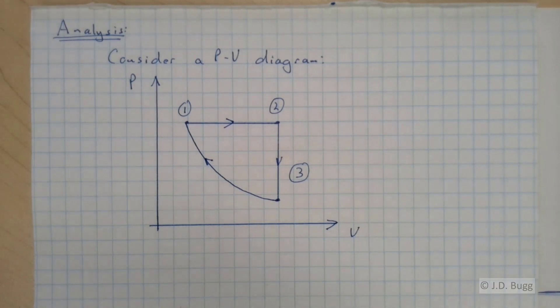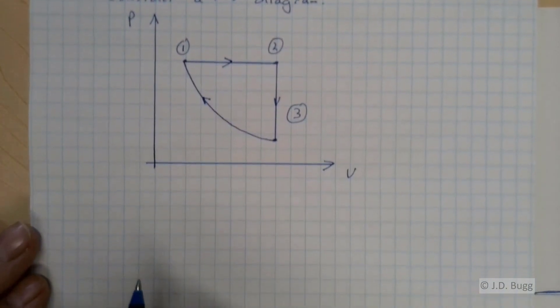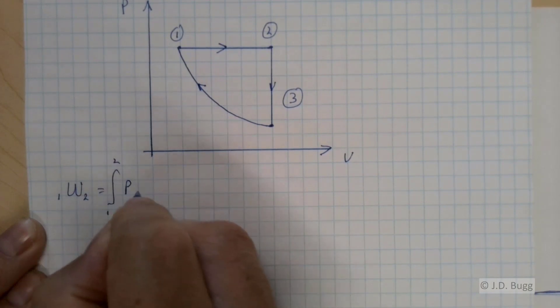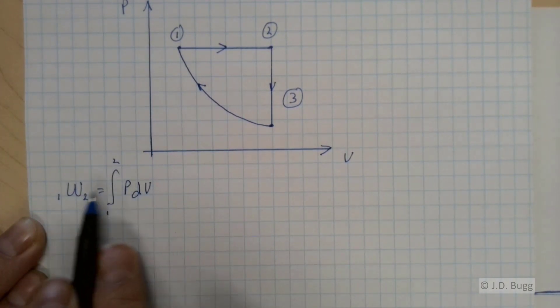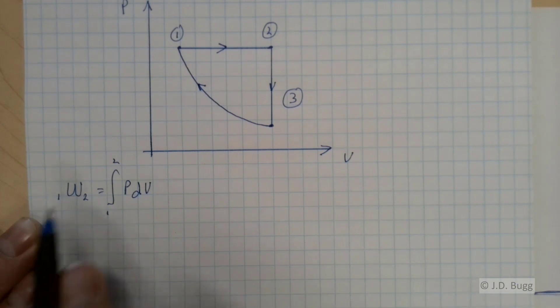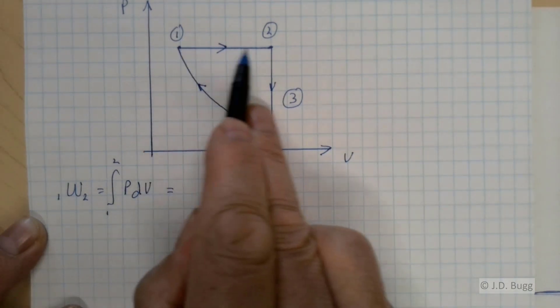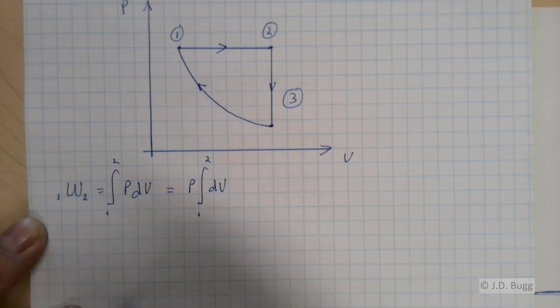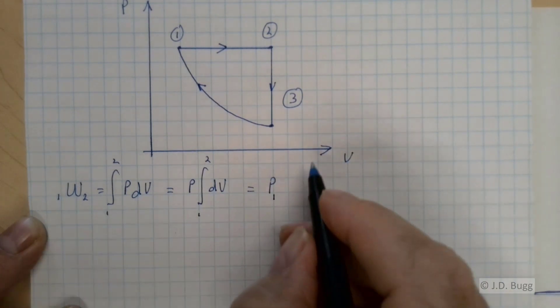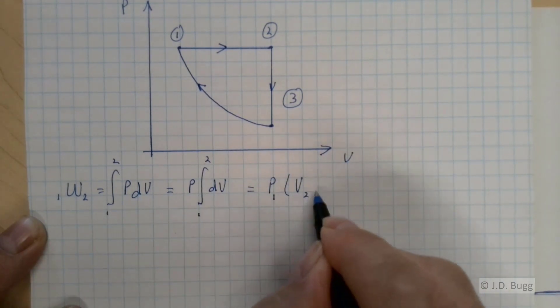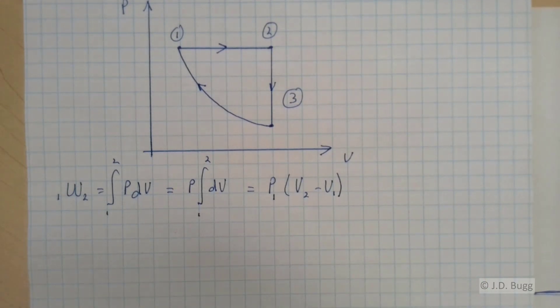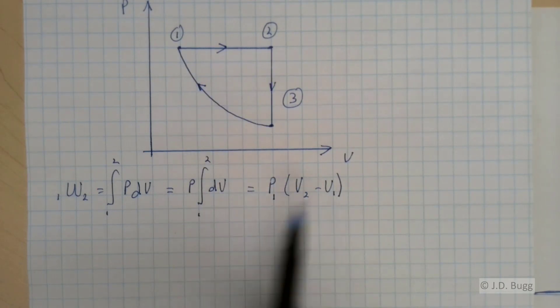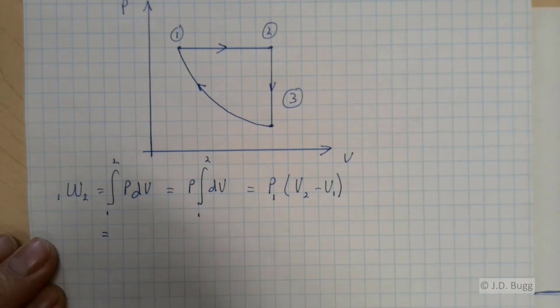So the next thing we need to do here is go ahead and calculate the work. The work from 1 to 2 is the integral from 1 to 2 of P dV. Because this is a constant pressure process, we can take the pressure outside of the integral because it's constant. And this just becomes P1 times V2 minus V1. And if we look back at the problem statement, we know all of these things.